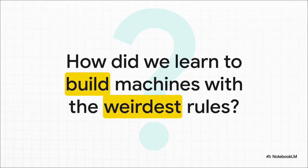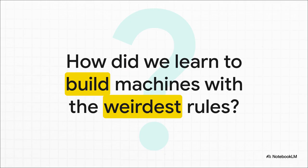So that's the big question, right? For decades, physicists knew that the rules for tiny little things like atoms were just strange. But how in the world did we learn to take that strangeness and build actual machines with it? I mean, how do you engineer a ghost?